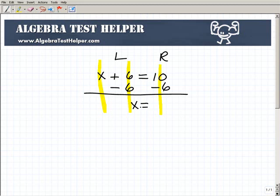I didn't want x plus 6. I just wanted x, so I accomplished my mission there. On the right-hand side, I have 10 plus a negative 6, or 10 minus 6, and that's 4.